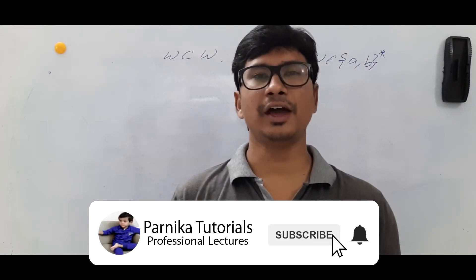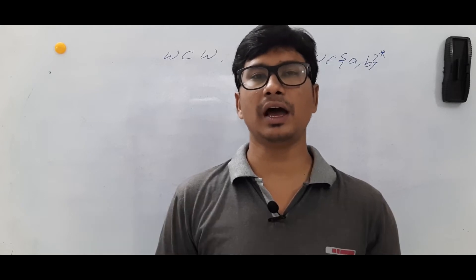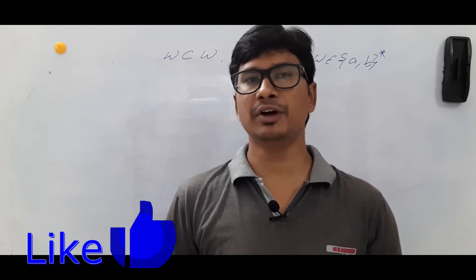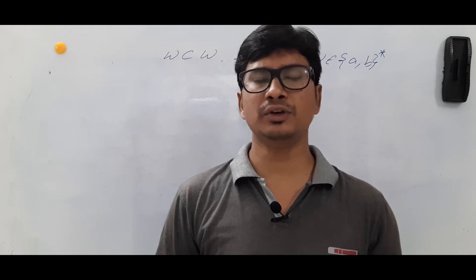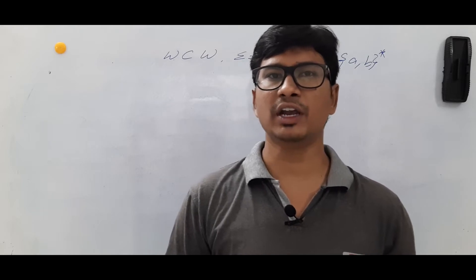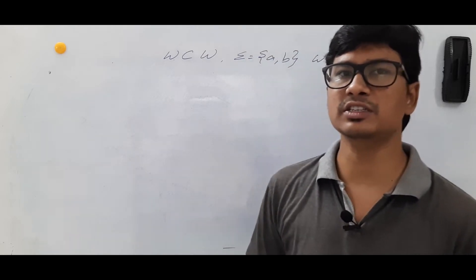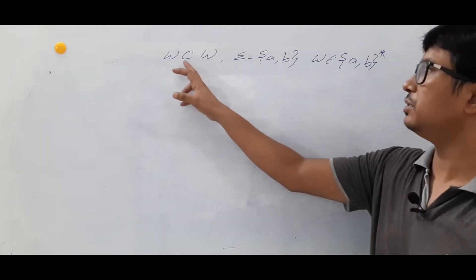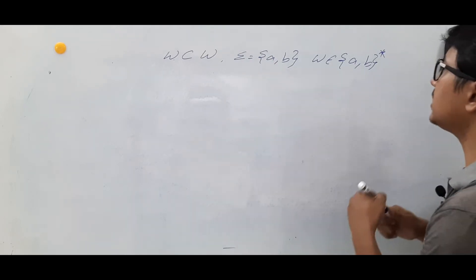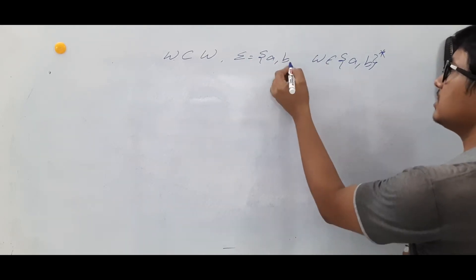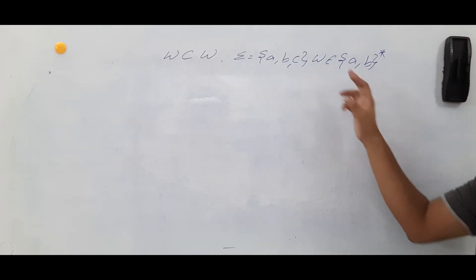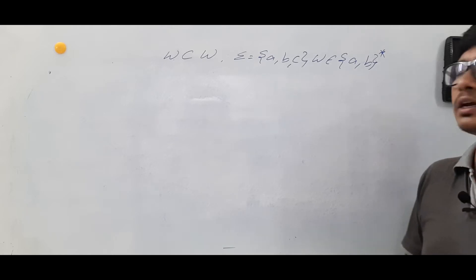Good morning friends. I hope everyone is doing well. I request everyone to watch my videos in a sequence for better understanding. In this video, I want to discuss how to construct a Turing machine for the language consisting of strings in the form of WCW over alphabets A, B, C. W belongs to {A, B} Kleene closure.